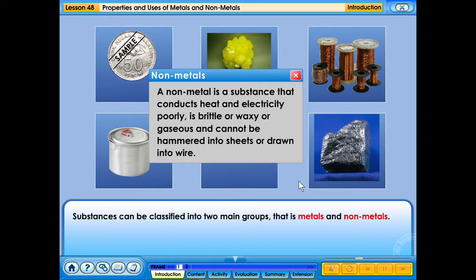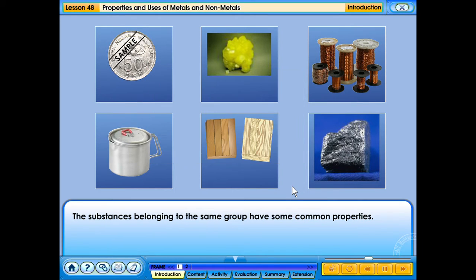The substances belonging to the same group have some common properties. Observe the pictures given. Can you tell which ones are metals and which ones are non-metals? Click the picture to know whether they are metals or non-metals.